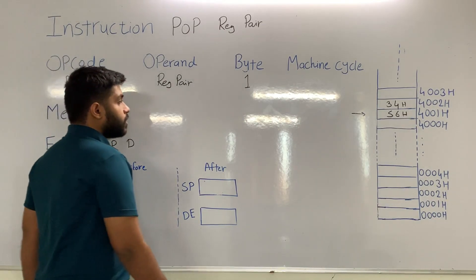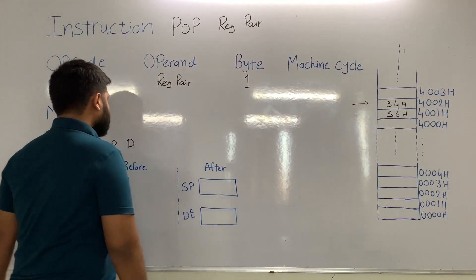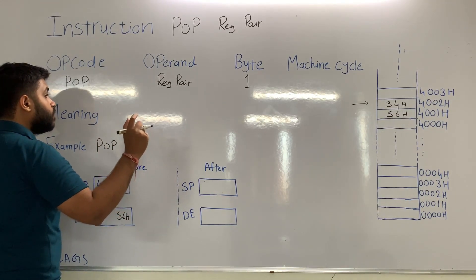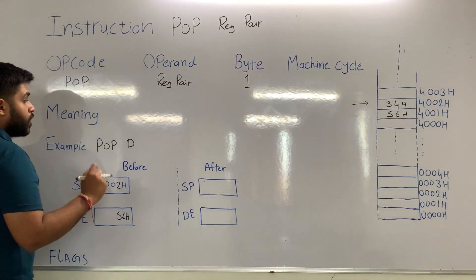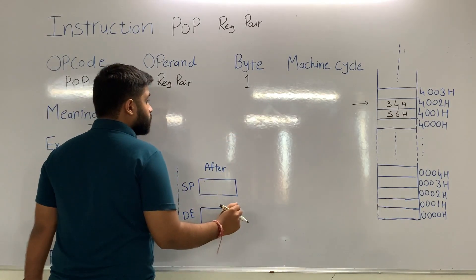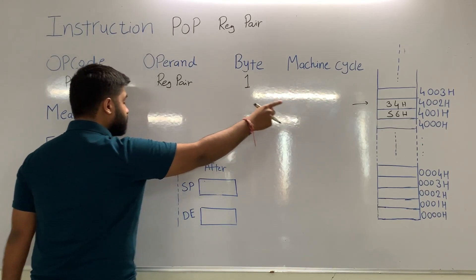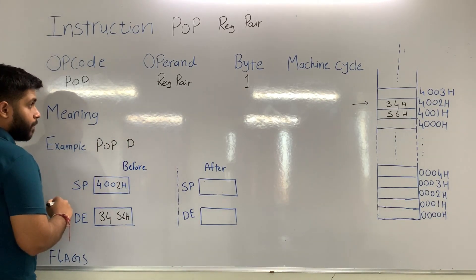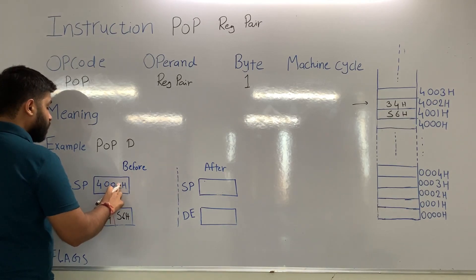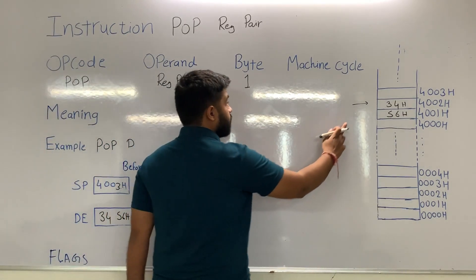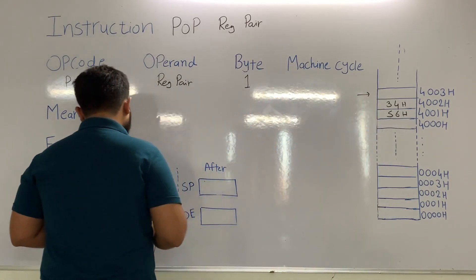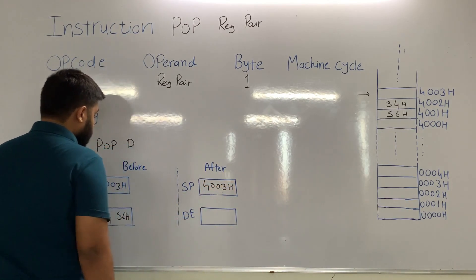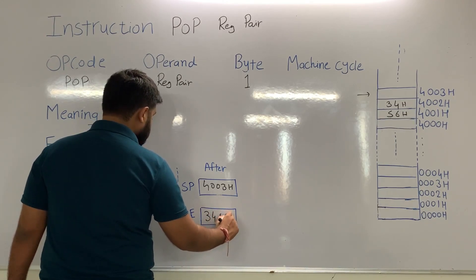Now the stack pointer is pointing at 4002H. The data from that memory location, which is 34H, will be transferred to the higher byte of the DE pair. After the data is transferred, the stack pointer will be incremented by 1 again, so it is now pointing at 4003H. After execution, the stack pointer is 4003H and the content of the DE pair is 3456H.